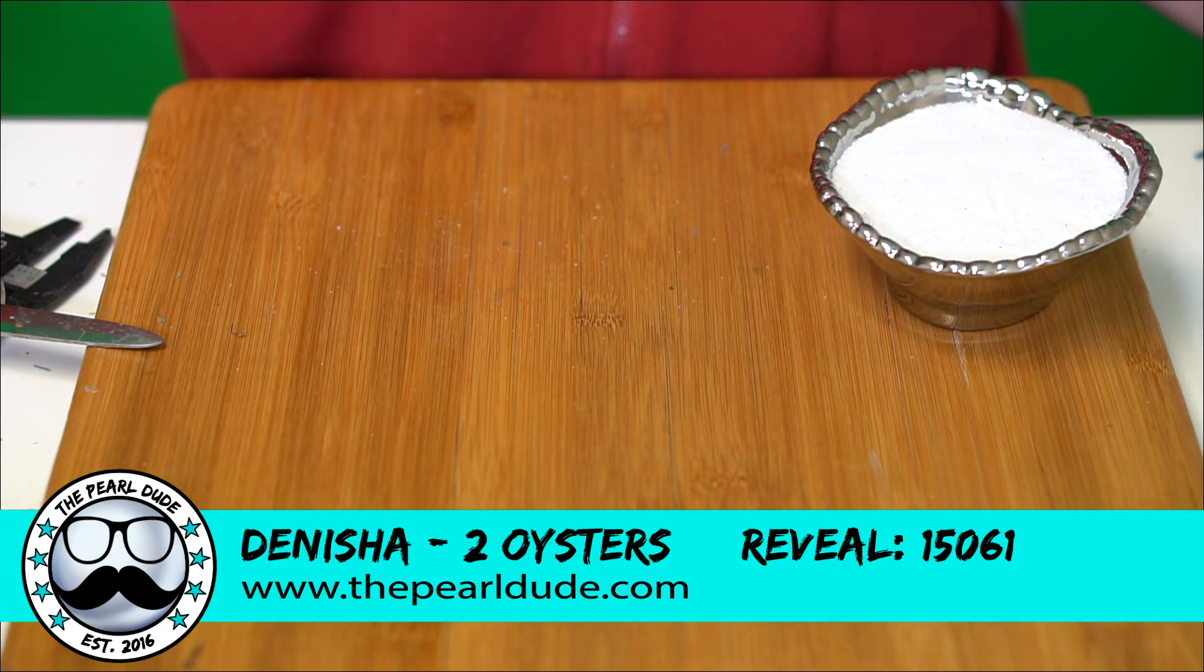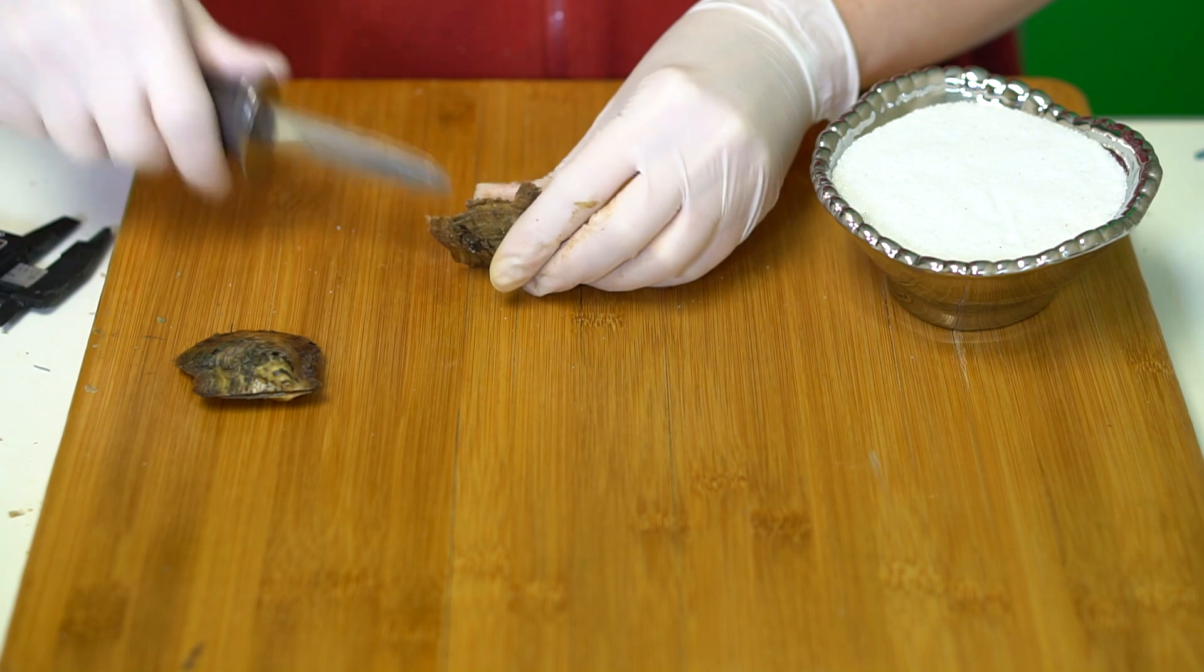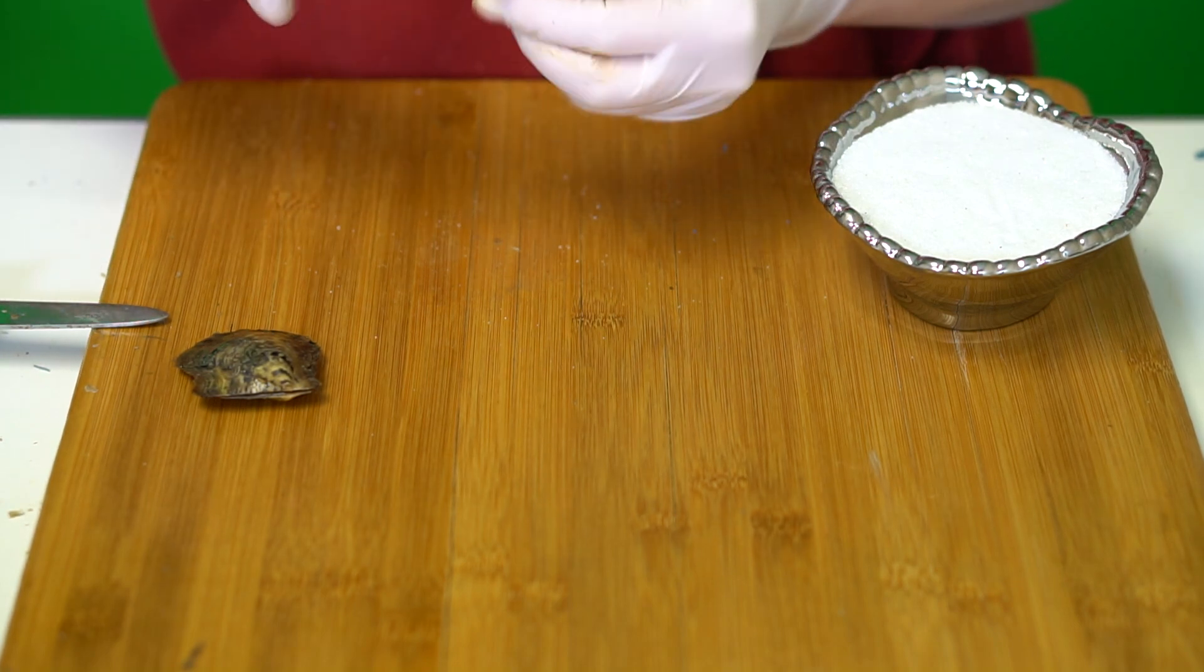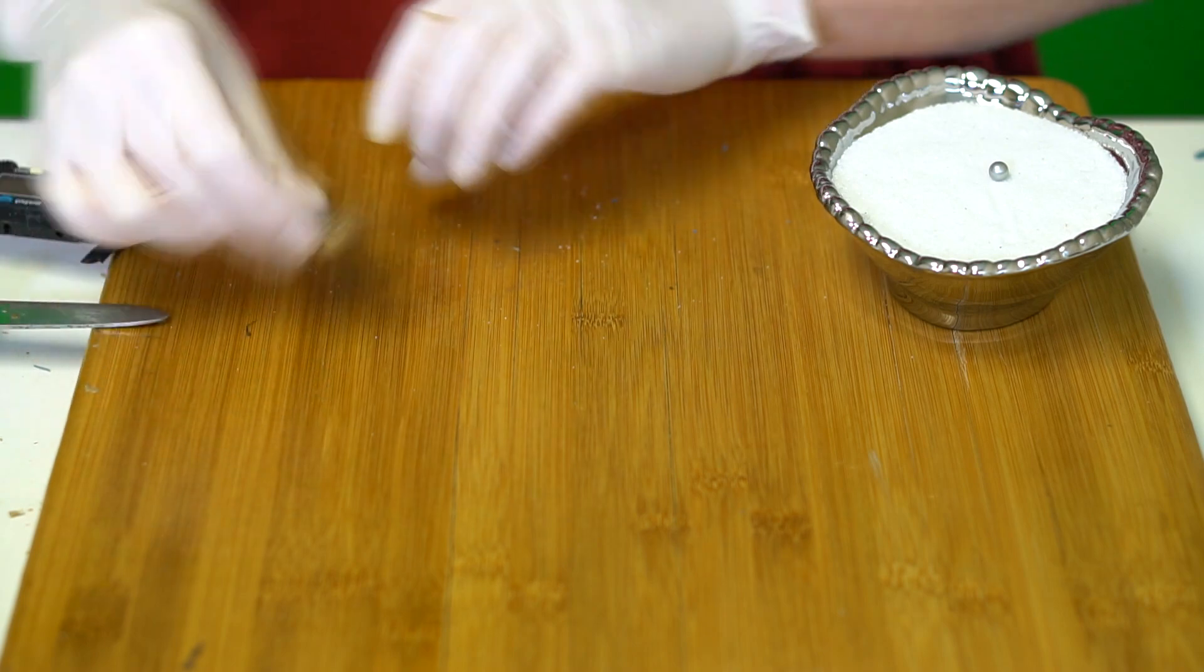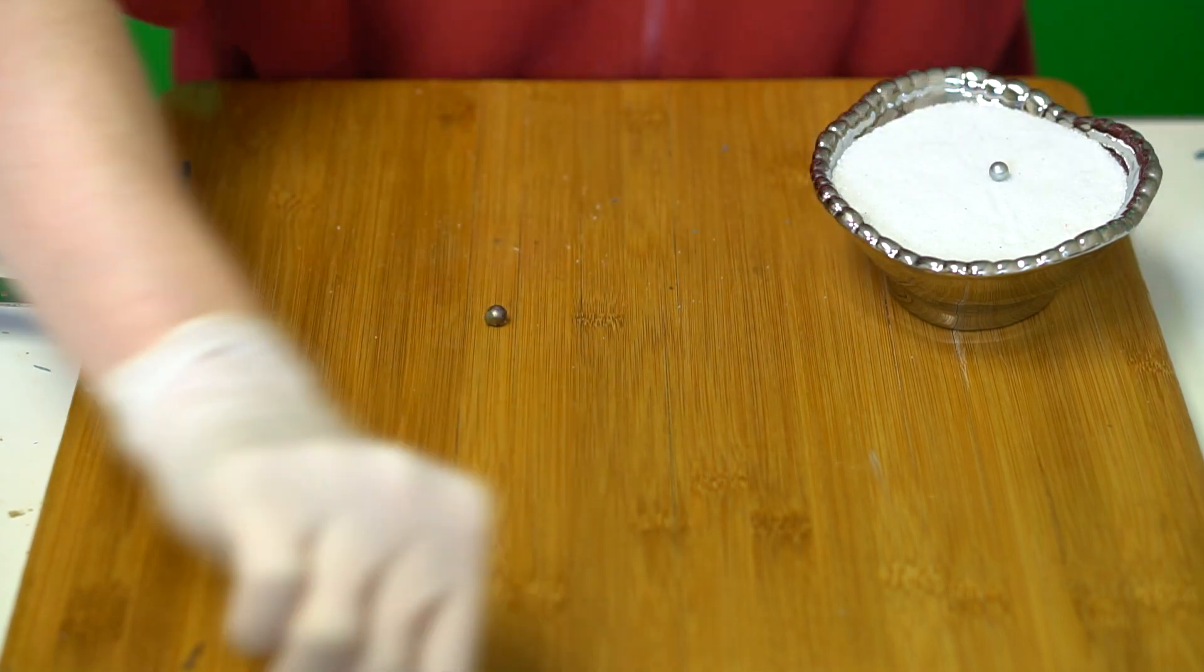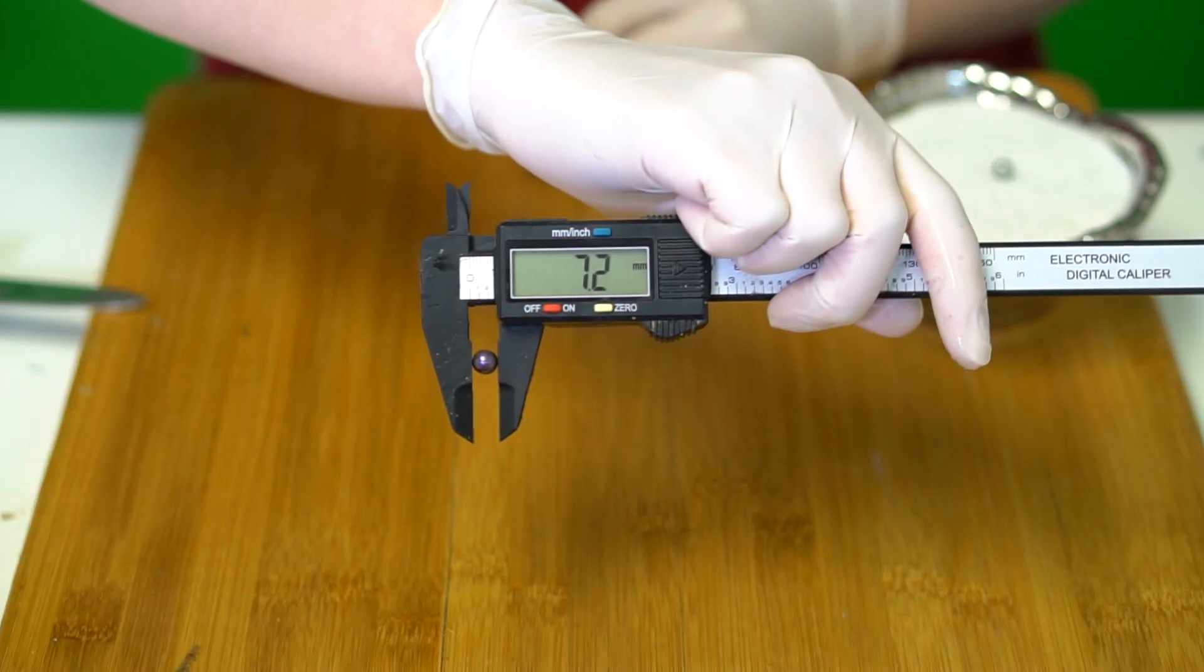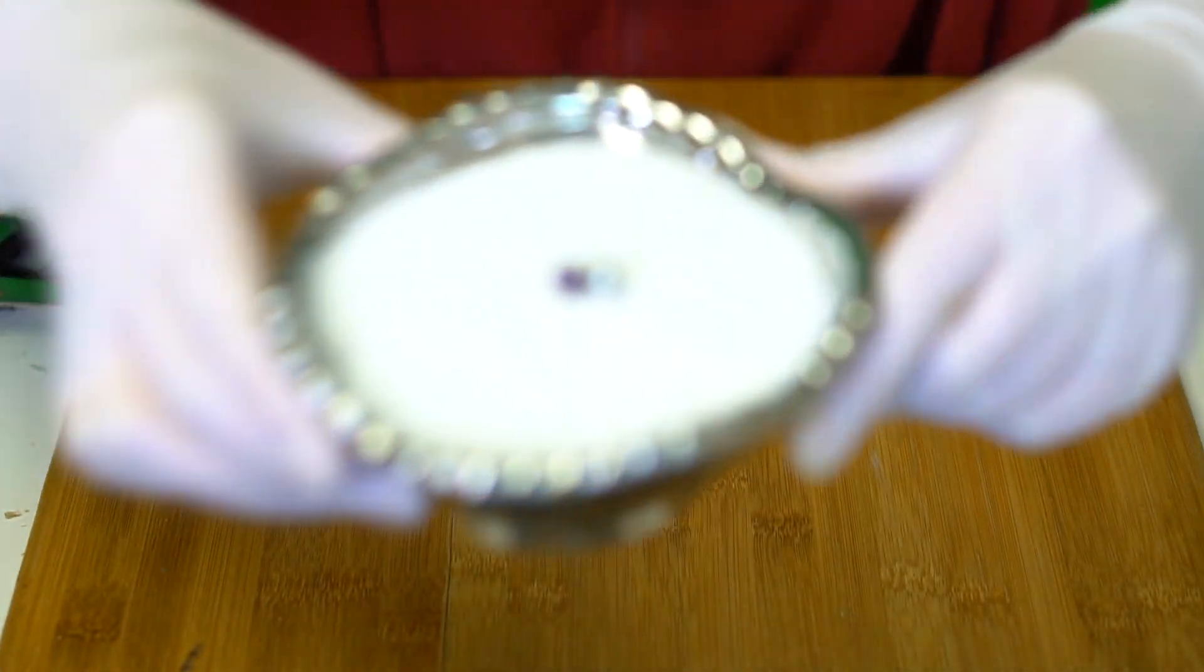Next reveal is for Denisha, reveal 61. We're opening two oysters. And now we have a silver, 7.1. And a dark violet, kind of a chrome violet, 7.2. Beautiful colors. Congratulations.